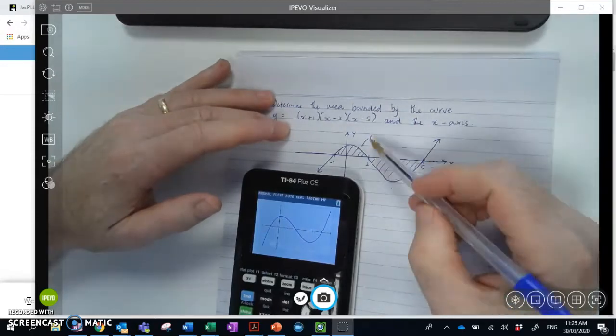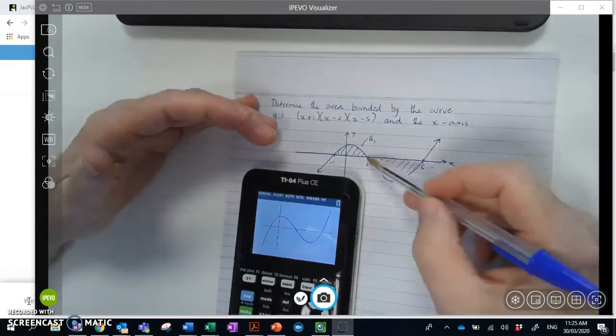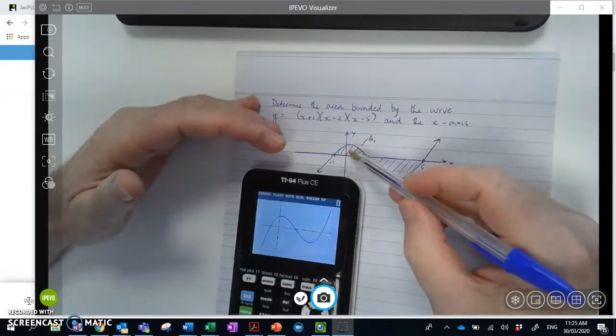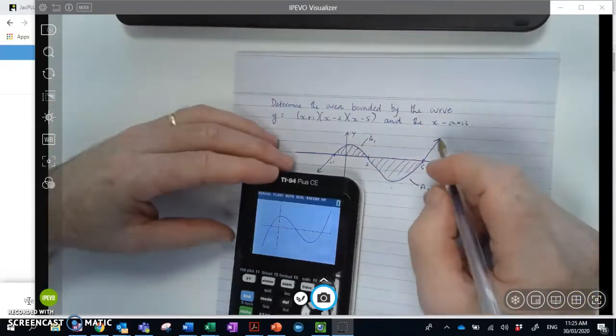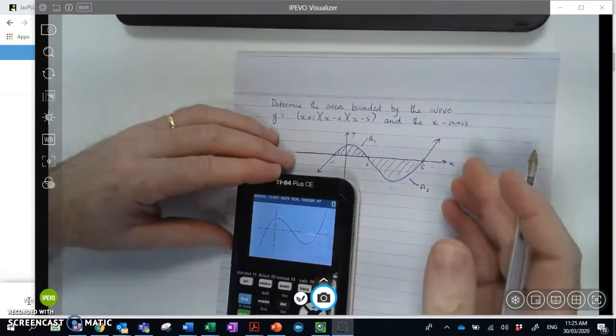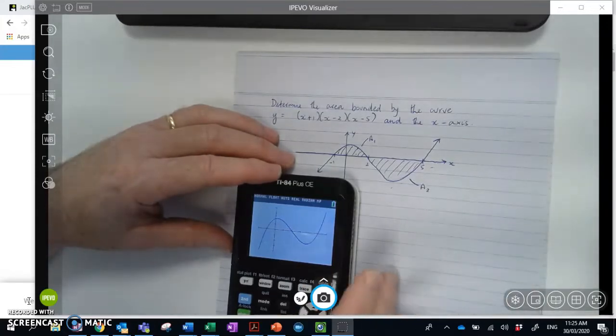Now we know that we add a positive to a negative, it's effectively going to subtract the areas. So we're actually going to find something which doesn't represent the total area, more it would represent the distance between the two of them. So what we need to do is actually calculate area 1 separate to area 2, and then add the magnitude of those areas, the size of them.